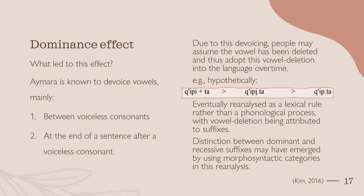The way this reanalysis may have happened can be seen in a hypothetical example. Eventually, the vowel elision may have been reanalyzed as a lexical rule rather than a phonological process, being falsely attributed to the suffixes which appear to drive it. As for the dominance effect itself, this may simply be due to viewing the suffixes through their respective morphosyntactic categories, and using them as seen appropriate with this in mind.